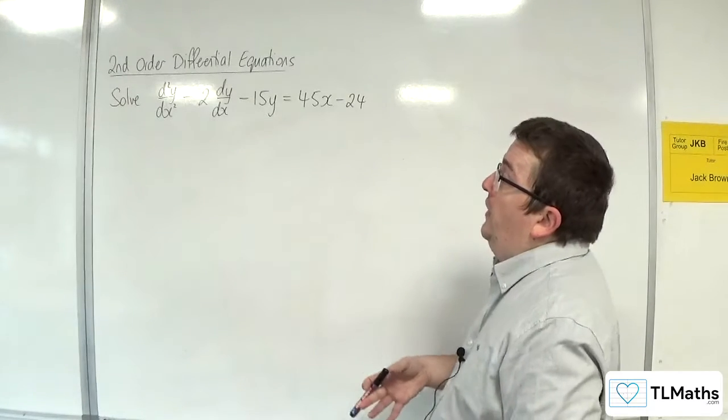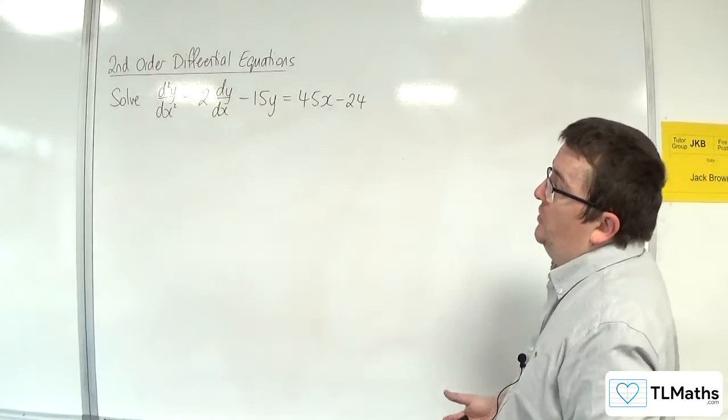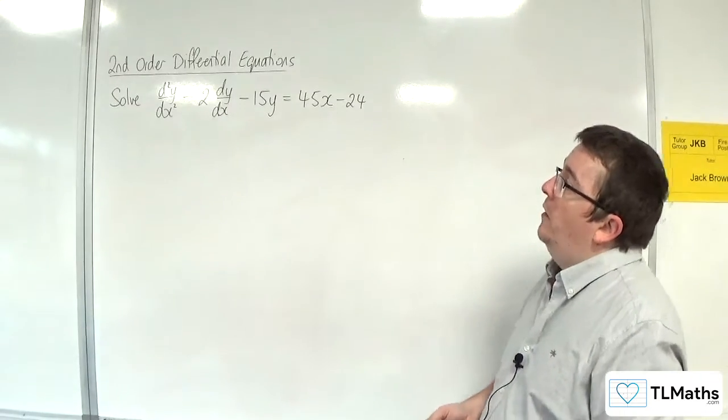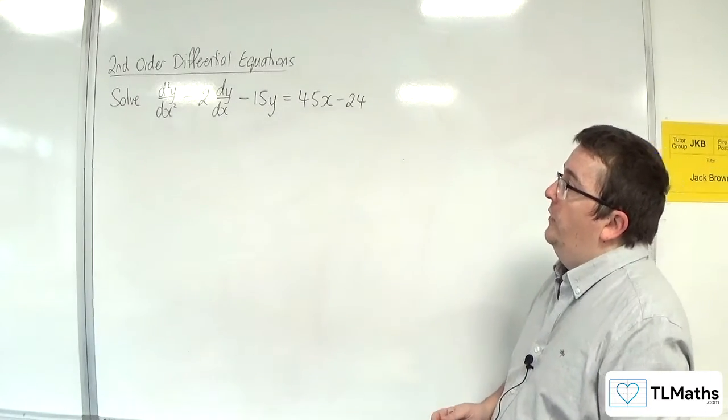In this video I'm going to solve d²y/dx² - 2dy/dx - 15y = 45x - 24.